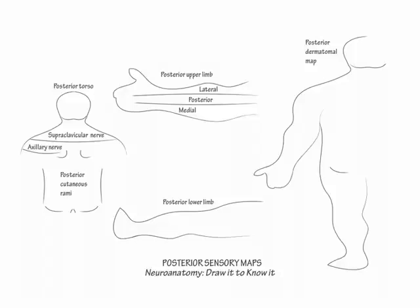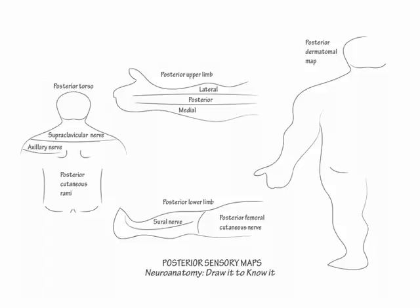They are supplied by the medial cord of the brachial plexus. Next show the posterior femoral cutaneous nerve covers the midline back of the thigh, and the sural nerve covers the lower lateral leg and lateral foot. The sural nerve is formed from branches of both the peroneal and tibial nerves.